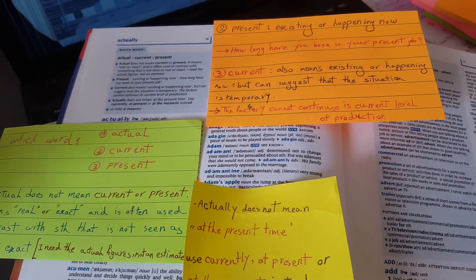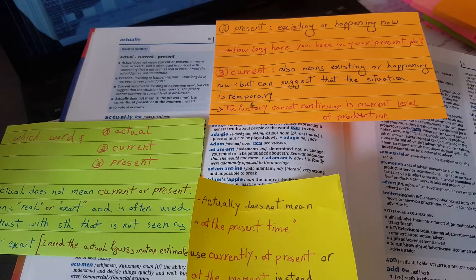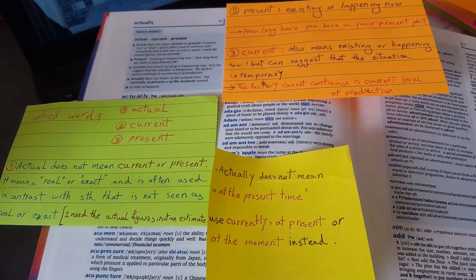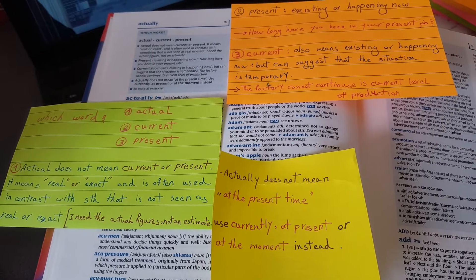The factory can continue at its current level of production. 'Actually' does not mean at the present time. Use 'currently,' 'at